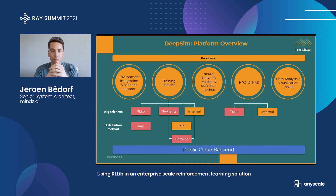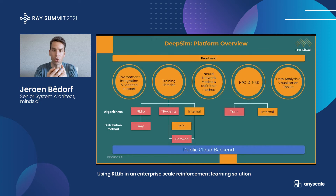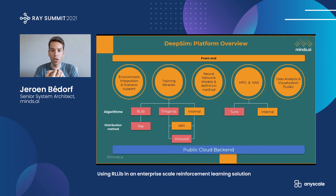Looking at our DeepSim platform, we see a number of well-known components — the red boxes — such as RLib, Ray, TF-Agents, or Holocot. These are complex components that the average user might not be familiar with in their day-to-day work. That's why most of our users use a simple front-end, either a Python interface or a web interface, to get control of all the features and capabilities that the Ray Software Stack offers. All of this runs on the public cloud to take advantage of large-scale training runs.